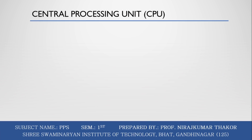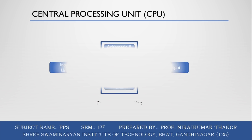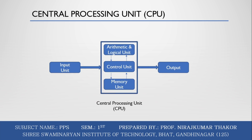The computer system is nothing without the Central Processing Unit, which is known as the brain or heart of the system. The CPU is an electronic hardware device that can perform different types of operations such as arithmetic and logical operations. The CPU contains two parts: the Arithmetic Logical Unit (ALU) and the Control Unit.